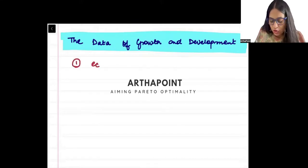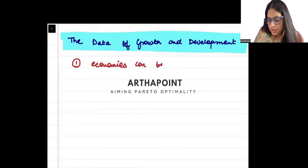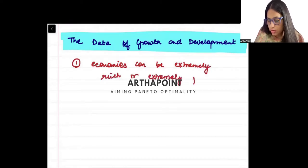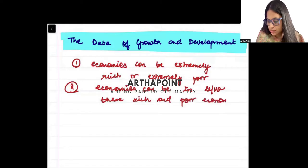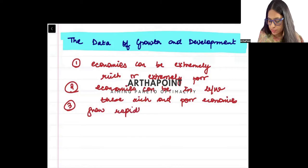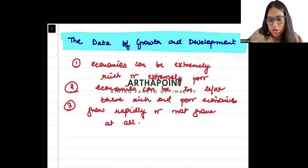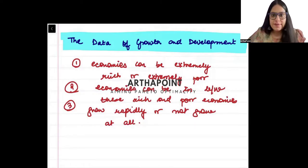First, economies can be extremely rich or extremely poor. Second, economies can be in between these rich and poor economies. Third, economies can grow rapidly or not grow at all. All these things are possible. So when all these things are possible, the question is how do we see this through the actual data? Let me quickly share the actual dataset with you and then we will try to analyze it.